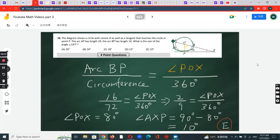Arc BP over circumference equals angle POX over 360. This is angle POX over the whole angle, which is 360.